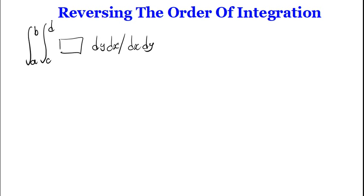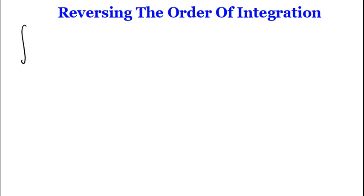When reversing the order of integration, focus on the limits of integration, and if possible, sketch all the limits to have a clear picture of what you're doing. I'm going to use an example — I'm not going to integrate; you can do that yourself for both the original and reversed integrals and compare. The example is: integral from 0 to 1, then x to 1, of 1 over (1 + y²) dy dx.